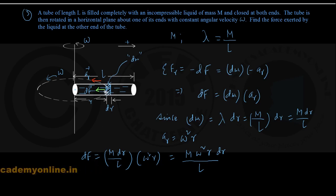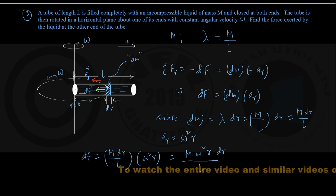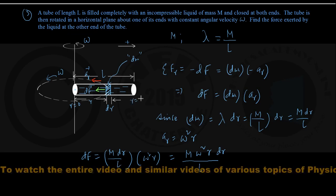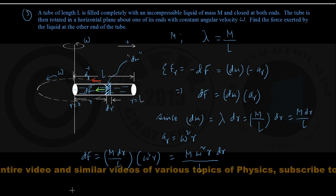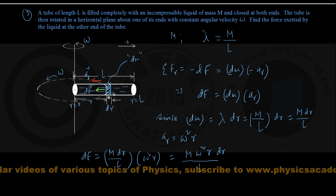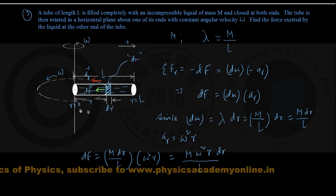Once we find the force on one element, we think of the whole length of liquid as made up of many such infinitesimal elements, starting from the left end on the axis where R equals 0, up to the farthest right end where R equals L. The net total force on the liquid is found by integrating DF between limits 0 to L.